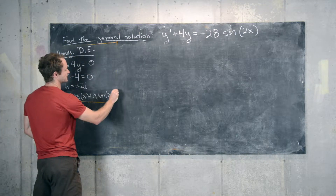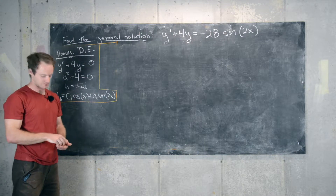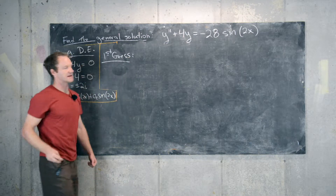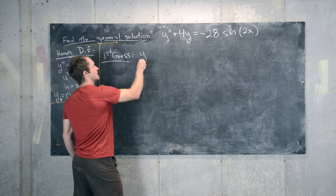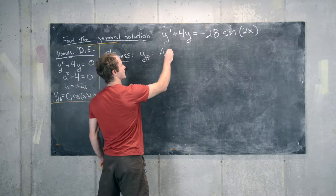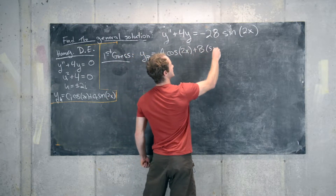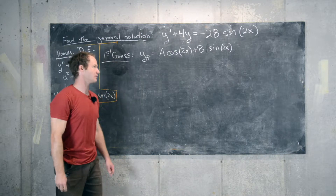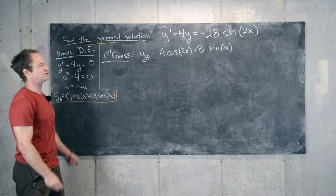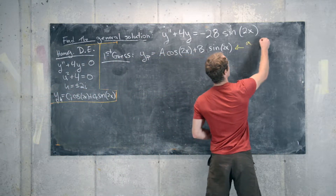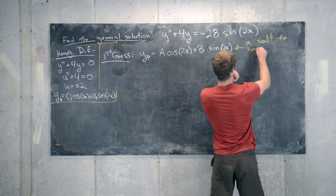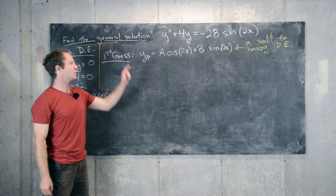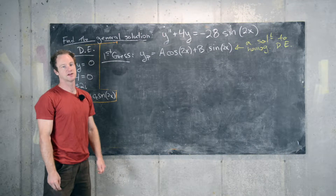This is the homogeneous part of the differential equation. Now we'll look at the particular solution. Using the method of undetermined coefficients, a good first guess for a particular solution would be: yp equals a times cosine of 2x plus b times sine of 2x, where a and b are coefficients to be determined. But there's a problem — this is already one of the homogeneous solutions, meaning it's a solution to the corresponding homogeneous equation. So when we plug this in, it's impossible to get negative 28 sine 2x; we'll get 0.